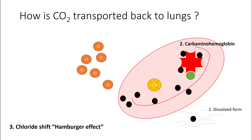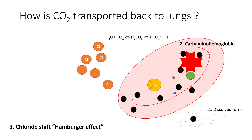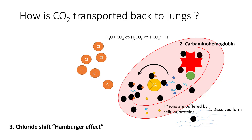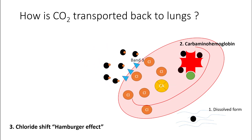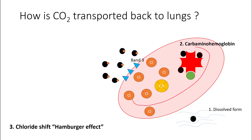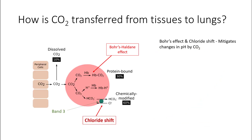The majority of carbon dioxide is transported in the form of bicarbonate ions. Carbon dioxide is easily diffusible across the RBC cell membrane, and red blood cells have a lot of carbonic anhydrase. Carbonic anhydrase combines water molecules and carbon dioxide molecules into bicarbonate and hydrogen ions. The hydrogen ions are buffered by cellular proteins, while the bicarbonate ions are exchanged with chloride ions using a transporter protein called band 3. So carbon dioxide is transported in three forms: dissolved, protein-bound, and chemically modified as bicarbonate.